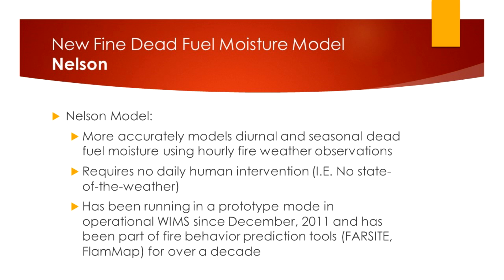We did a lot of testing, implementing it both in WEMS and running it operationally for a long time, because it's computationally intensive — it takes more time. Even though in the end all it does is produce the same numbers: one hour, 10 hour, 100 hour, and 1,000 hour fuel moistures. But it's also been integrated into all the fire behavior prediction tools, so it's a way for us to use the same model in all our tools — whether it's for Farsight, FLAMM, MAP, or NFDRS — which is a very good thing.